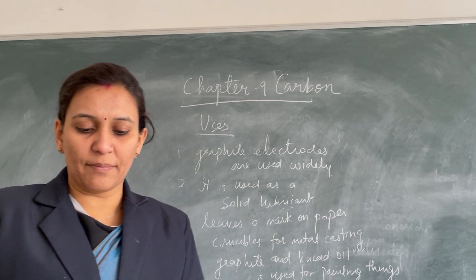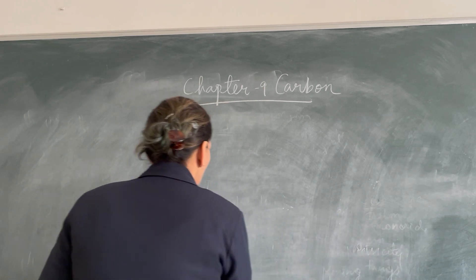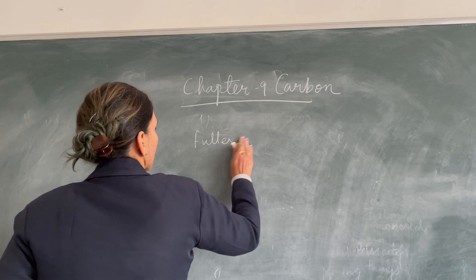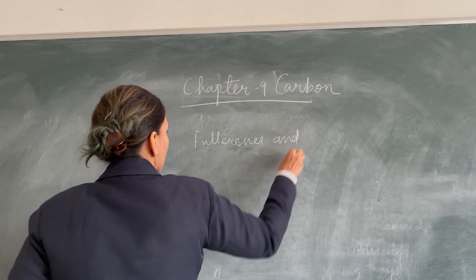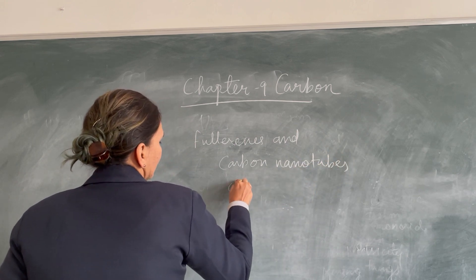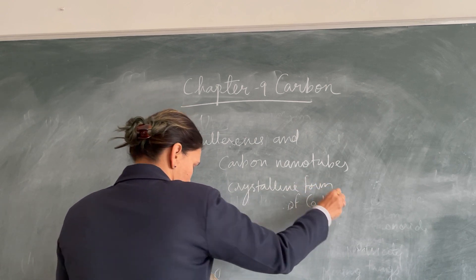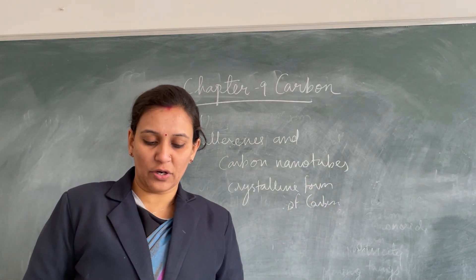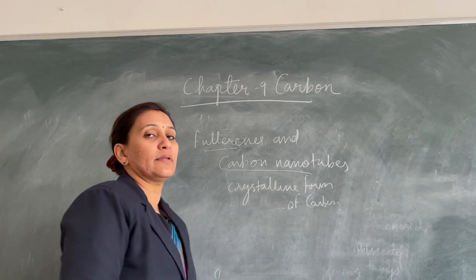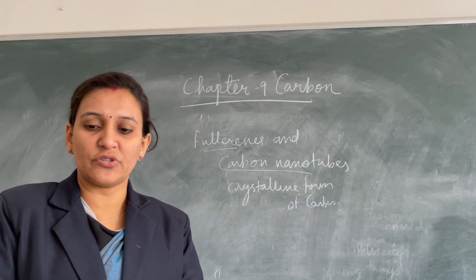Now let us talk about fullerene and carbon nanotubes. These are also crystalline forms of carbon. Carbon nanotubes have played a great role in the development of a new technology called nanotechnology. You only need to remember that fullerene and carbon nanotubes are crystalline forms of carbon, and more details will be studied in higher classes.